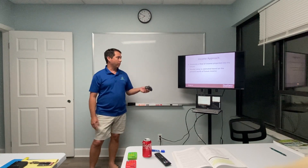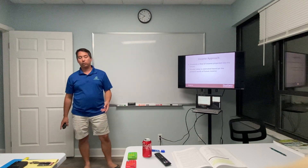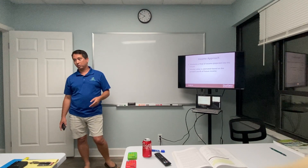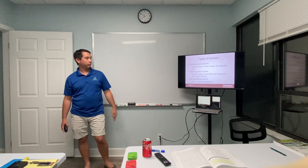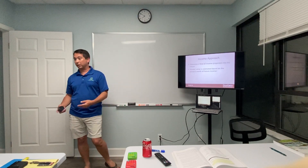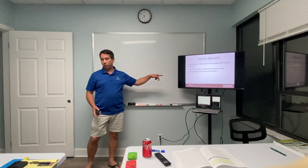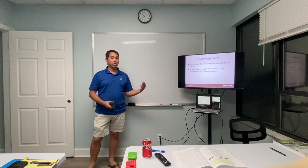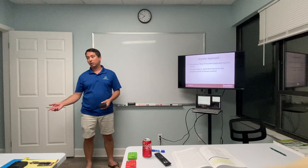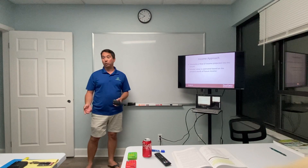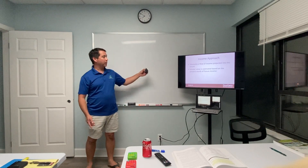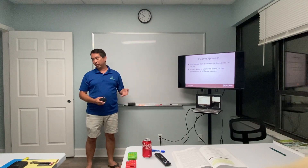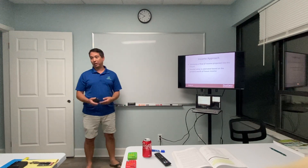The income approach measures the flow of income — the cash flow — and the market value is based on how much money the property makes. It represents the present worth of future income. For a DSCR loan, for example, if the property rents for $1,700 per month and we apply a 1% rule, we divide $1,700 by 0.01 and get $170,000 as the property's estimated value.